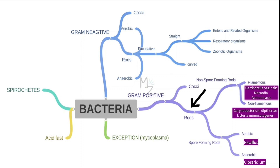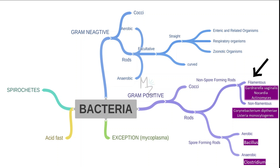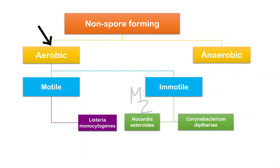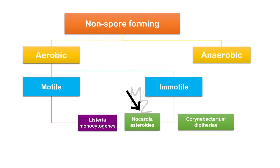If you want to know more about cocci, browse the channel. Rods are further subdivided into spore-forming and non-spore-forming rods, which are further subdivided into filamentous like Gardnerella vaginalis, Nocardia, Actinomyces, and non-filamentous like Corynebacterium diphtheriae and Listeria monocytogenes, the topic of today's video. Non-spore-forming rods can also be classified as aerobic and anaerobic. If aerobic, they will be motile or immotile. The immotile are Nocardia asteroides and Corynebacterium diphtheriae, while the motile is Listeria monocytogenes.